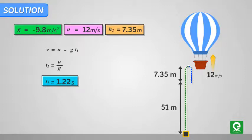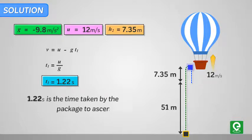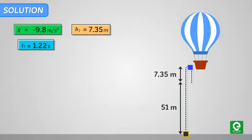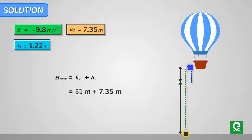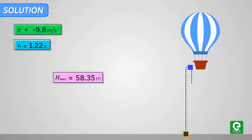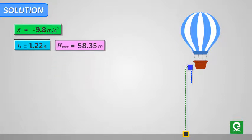On solving this we get t1 equal to 1.22 seconds. Hence 1.22 seconds is the time taken by the package to ascend 7.35 meters height. The package reaches the maximum height hmax from the ground, which is equal to h1 + h2. On substituting the values we get maximum height equal to 58.35 meters.